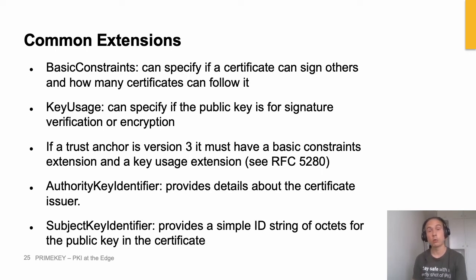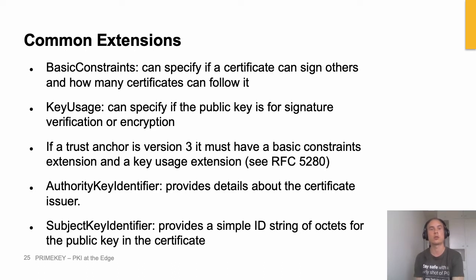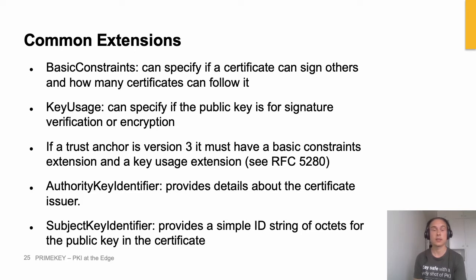If you're creating your own certificates in version three format and creating a certificate for a trust anchor, make sure you put those two extensions in there. The Authority Key Identifier contains a hash of the issuer's public key. Similarly, the Subject Key Identifier contains a hash of the public key found in the certificate itself.